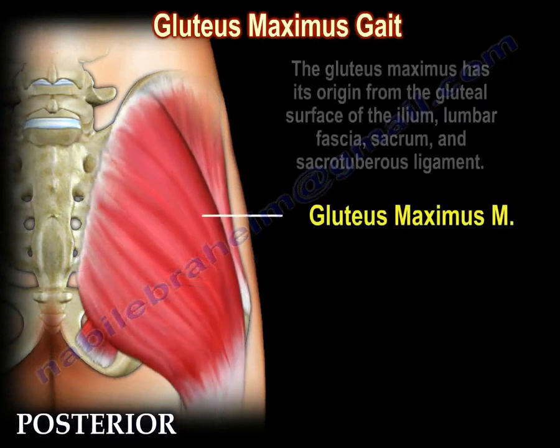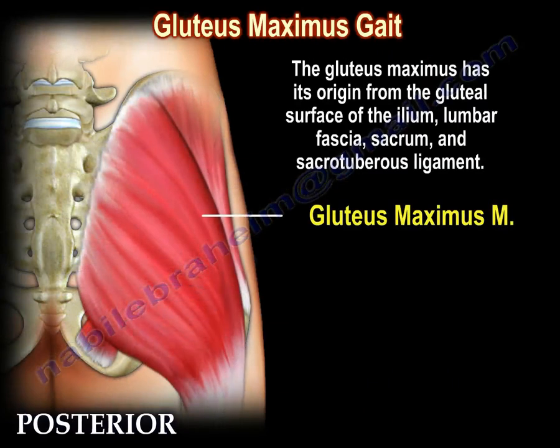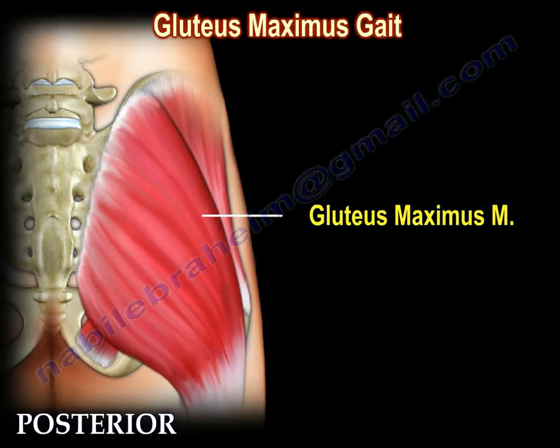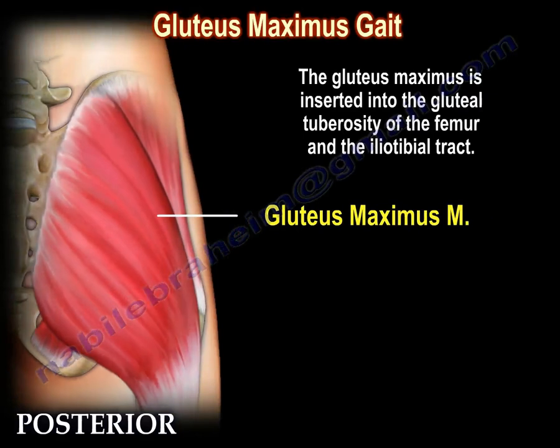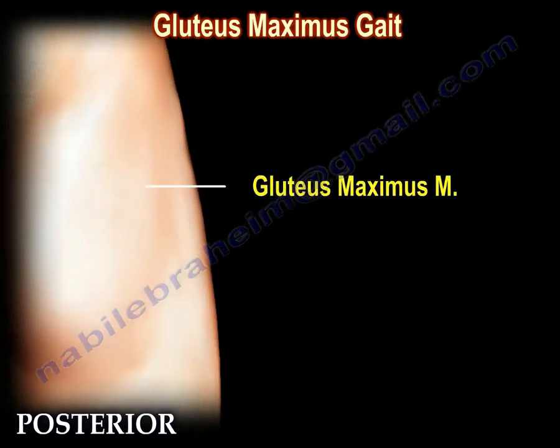The Gluteus Maximus has its origin from the gluteal surface of the ilium, from the lumbar fascia, from the sacrum and the sacro-tuberous ligament. The Gluteus Maximus is inserted into the gluteal tuberosity of the femur and the iliotibial tract.